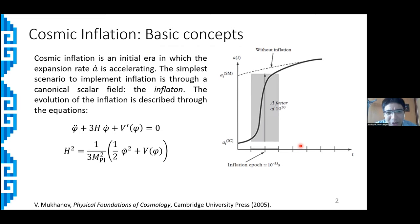We should recall that cosmic inflation is a theory introduced to solve some problems in the standard Friedman, Lemaitre, Robertson, Walker cosmology. It can be understood as an initial era in which the rate of increase of the scale factor is accelerating. The simplest way to implement this theory is to postulate the existence of a canonical scalar field called the inflaton, whose dynamics is described by requiring the corresponding stress energy tensor to be conserved, and the Friedman equation.